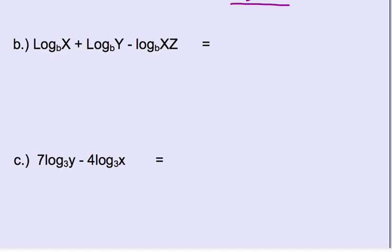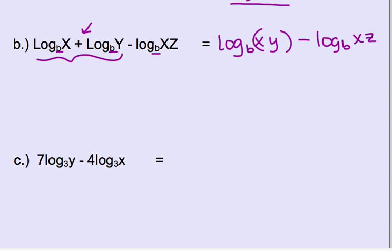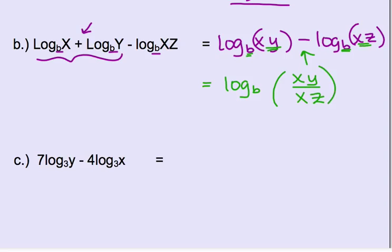We have 3 logarithms, all with the same base B. Take care of the first two: the operation between them is plus, so to combine them we multiply — logarithm base B of (x times y). We still have minus logarithm base B of (x times z). The operation between these two is subtraction, so combine by division: logarithm base B of (xy divided by xz). Look inside — we can cancel the x's, leaving logarithm base B of y over z. Condensed from 3 logarithms down to 1.